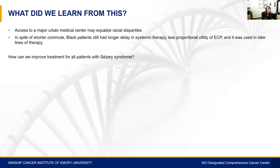We wondered whether access to a major urban medical center was equalizing racial disparities. However, even with a shorter commute, black patients still had a delay in starting systemic therapy and less proportional utilization of ECP, which was used in later lines of therapy.